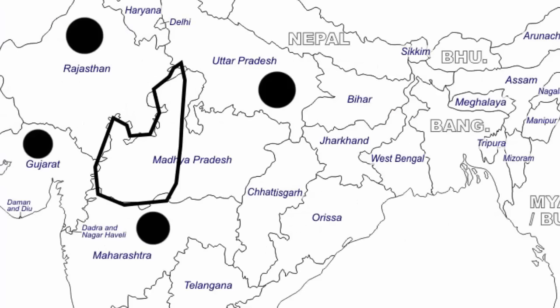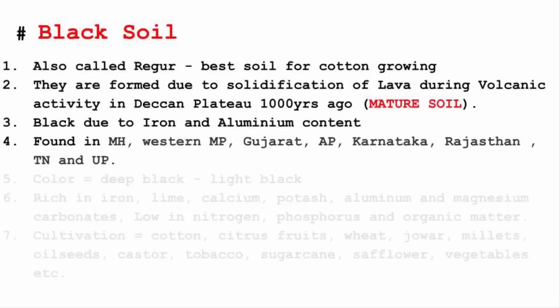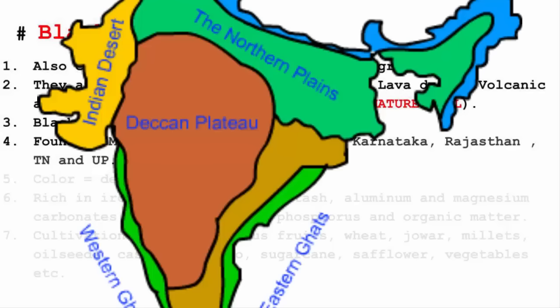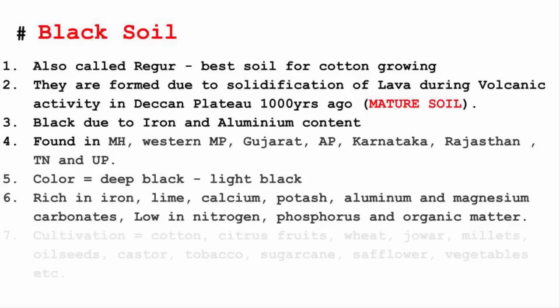Black soil is found mainly in Maharashtra, western Madhya Pradesh, Gujarat, Andhra Pradesh, Karnataka, Rajasthan, Tamil Nadu and Uttar Pradesh — all regions near or inside the Deccan Plateau. The color of the soil ranges from deep black to light black. Black soil is rich in iron, lime, calcium, potash, aluminium and magnesium carbonate, whereas it is low in nitrogen, phosphorus and organic matter.